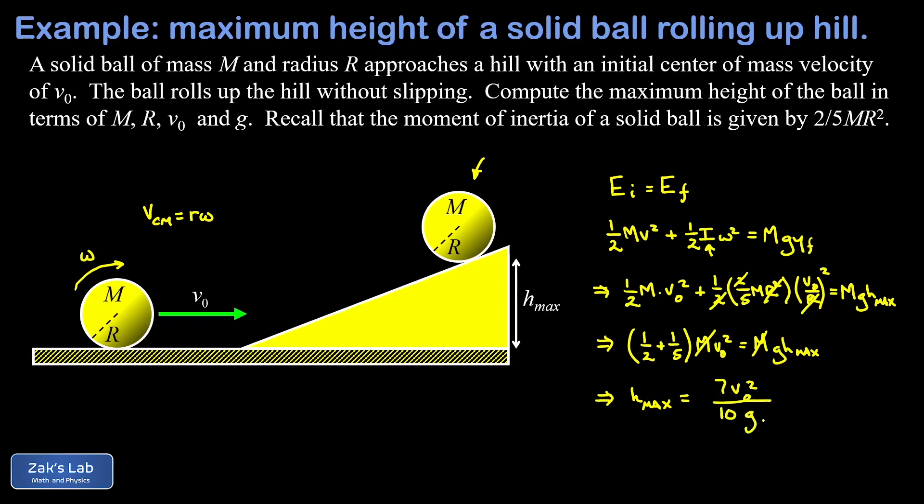So that result doesn't depend on the mass of the ball or the radius of the ball. It purely depends on the distribution of mass within the ball, in other words, the moment of inertia for the particular shape that we're rolling up this hill. So we would expect a different answer for a disc rolling up the hill or a hollow ball rolling up the hill and so on. But if we took two solid balls with different diameters and masses, they would go to exactly the same maximum height.